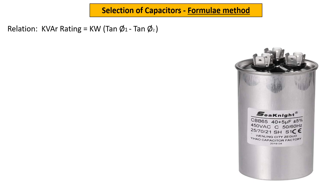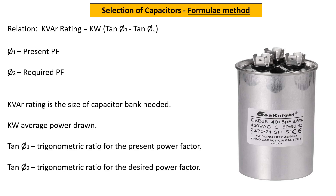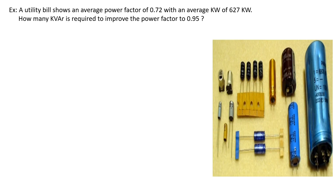In this formula method, the capacitor rating is in kVAR. For this method, the present and required power factor along with load in kilowatt need to be known. The present power factor is 0.72 and the desired power factor is 0.95. So, how much kVAR do we need to add?